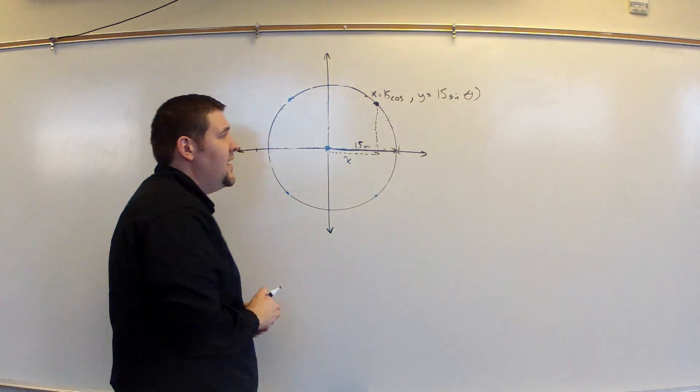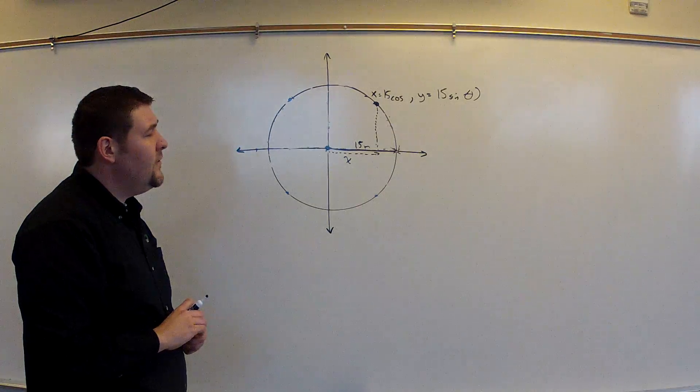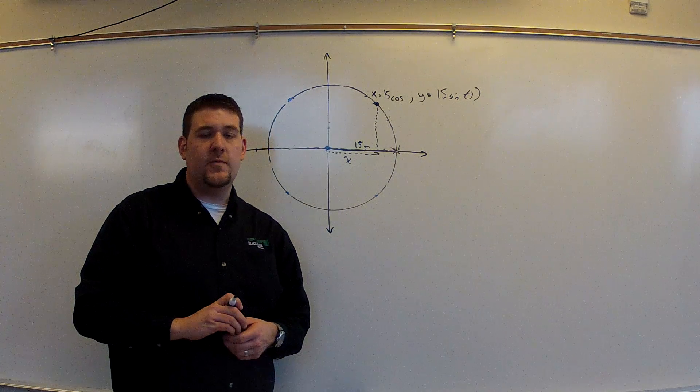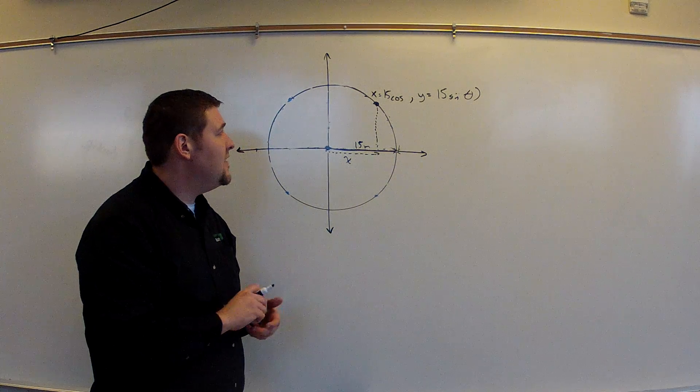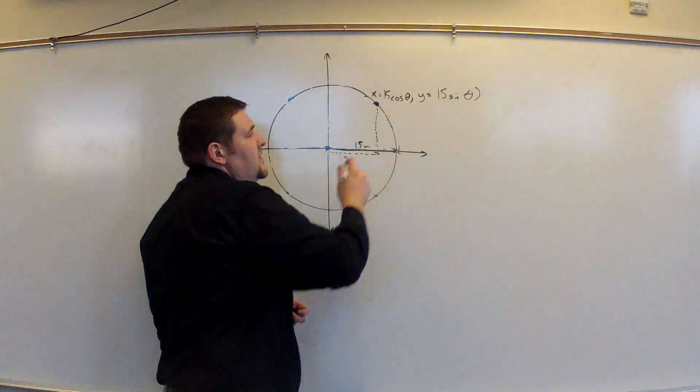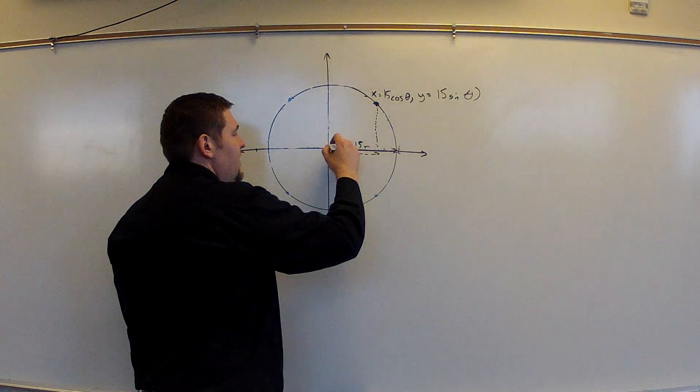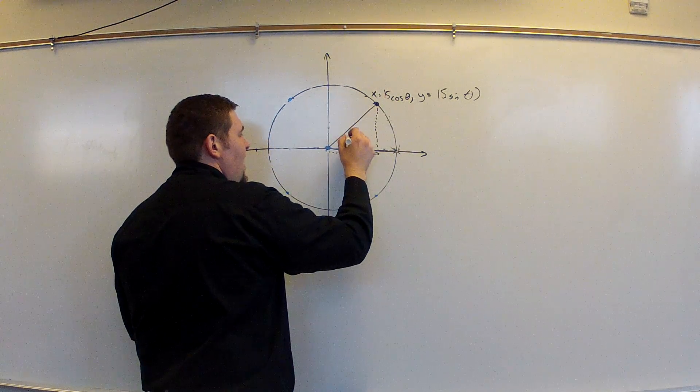But the x coordinate is cosine, the horizontal. So I could know where I am on this ferris wheel simply by taking 15 cosine of the angle I traveled, and 15 sine of the angle I traveled, where the angle is measured in this direction.